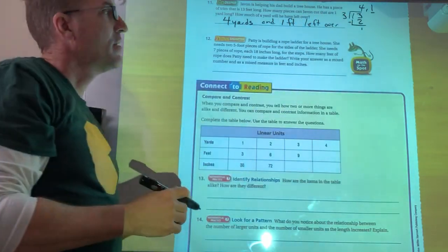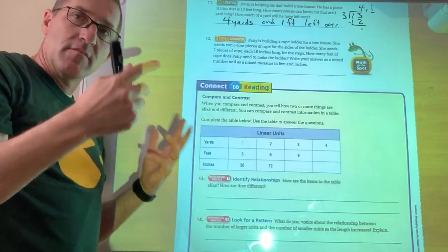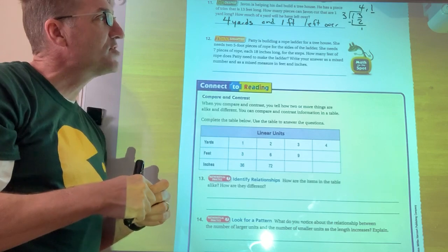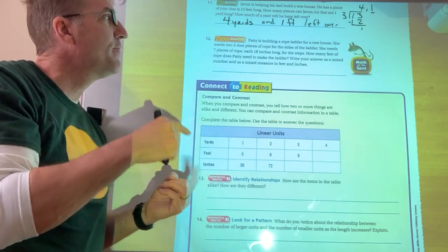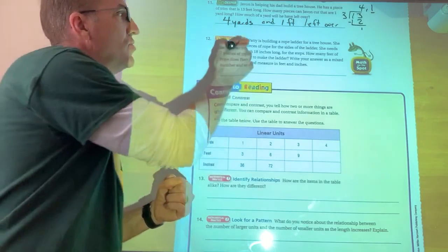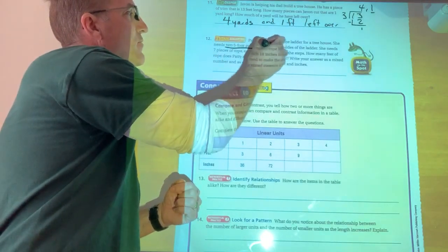Alright. This one's a little bit involved here. So we got to pay attention. Patty is building a rope ladder for a tree house. She needs two five foot pieces of rope for the sides of the ladder. Two five foot pieces of rope.